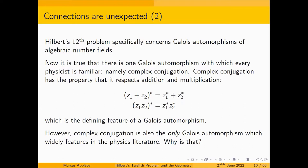In fact, complex conjugation, so far as I'm aware, is the only Galois automorphism which widely features in the physics literature. If somebody knows of another example, please tell me. Why is that? Well, the question is most easily answered by looking at an example.